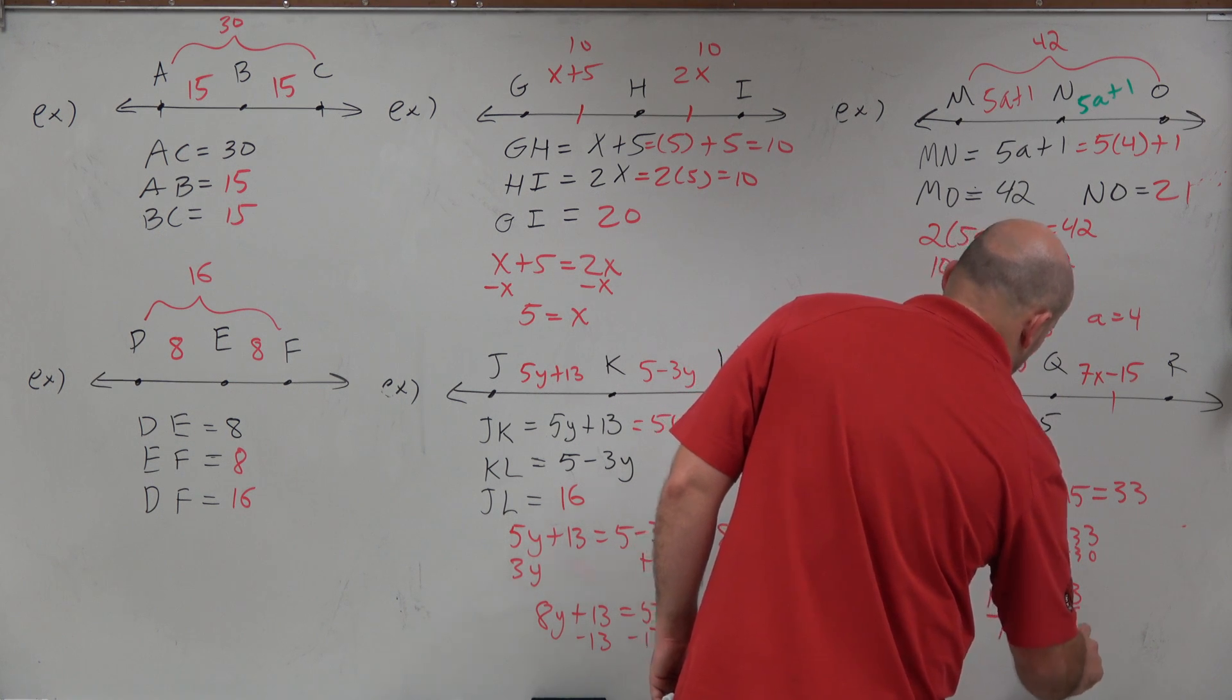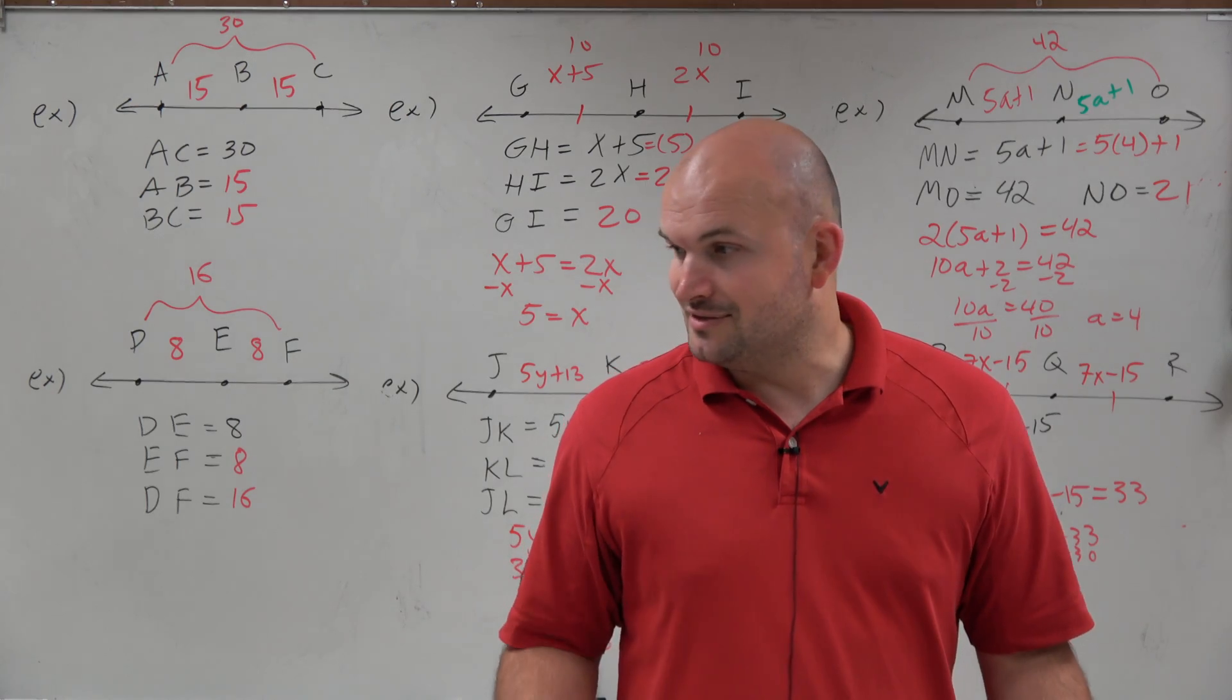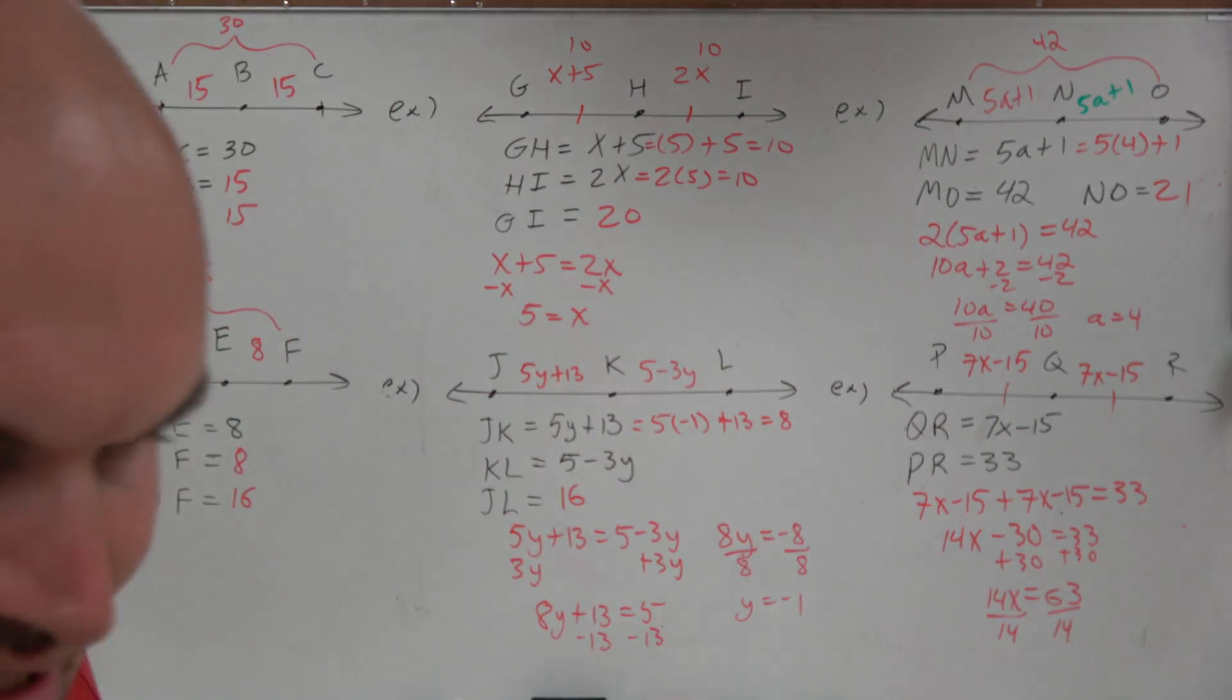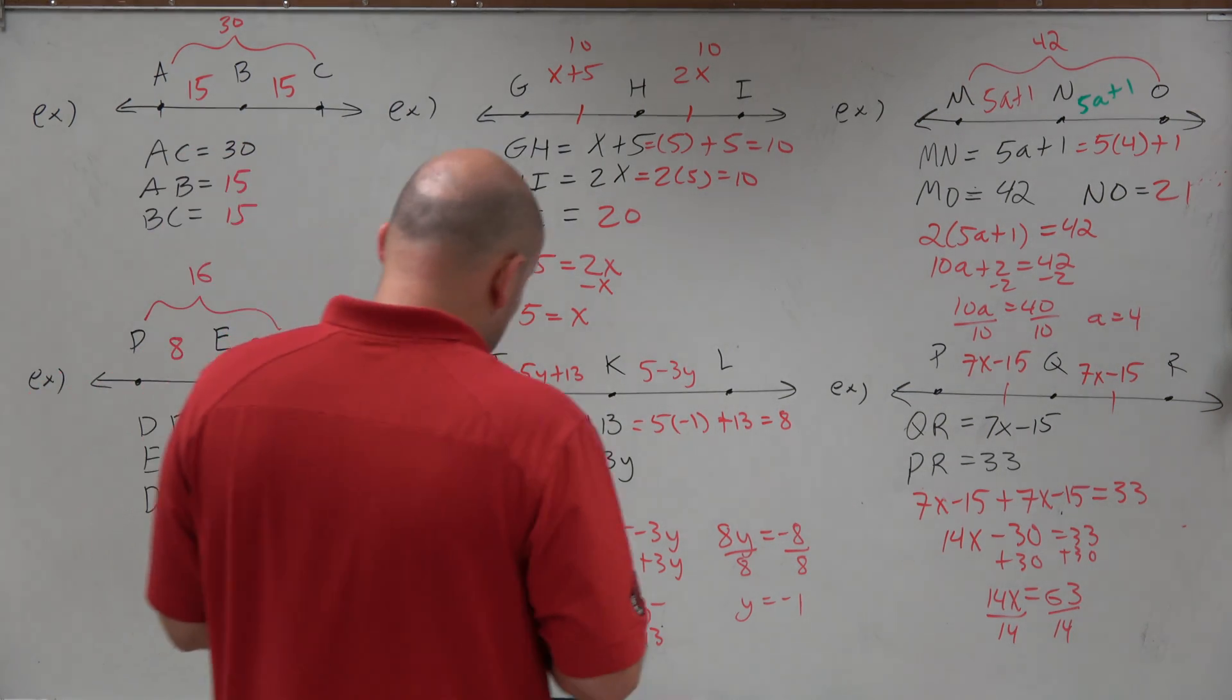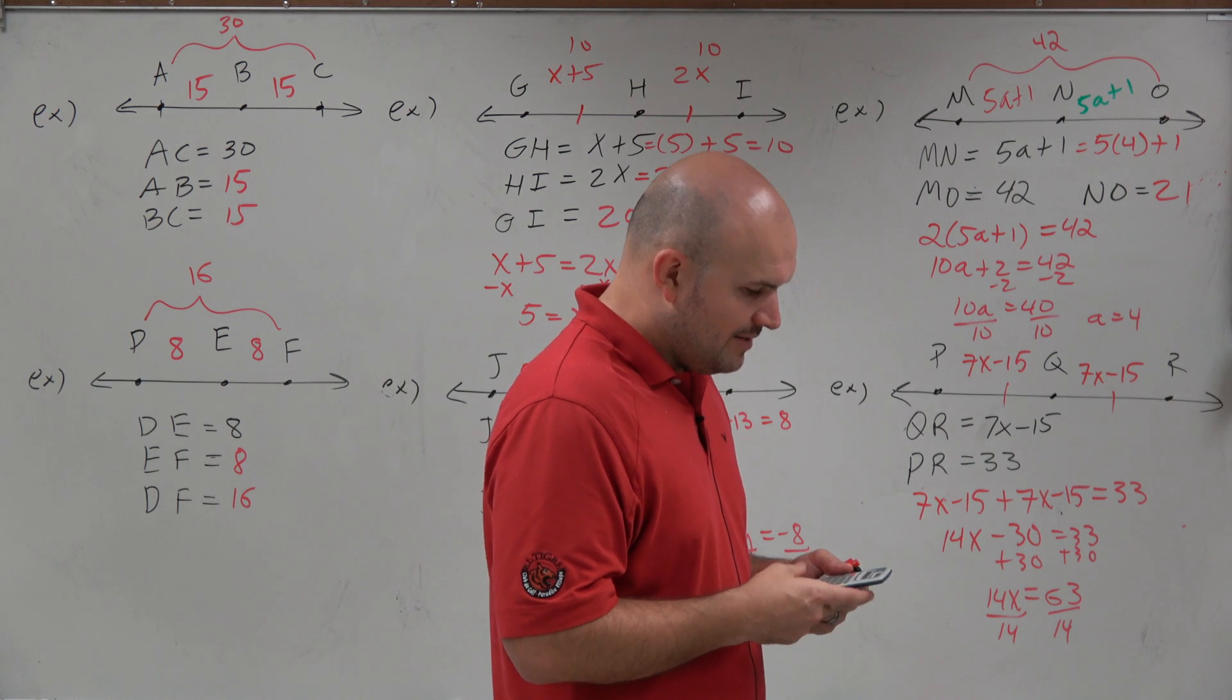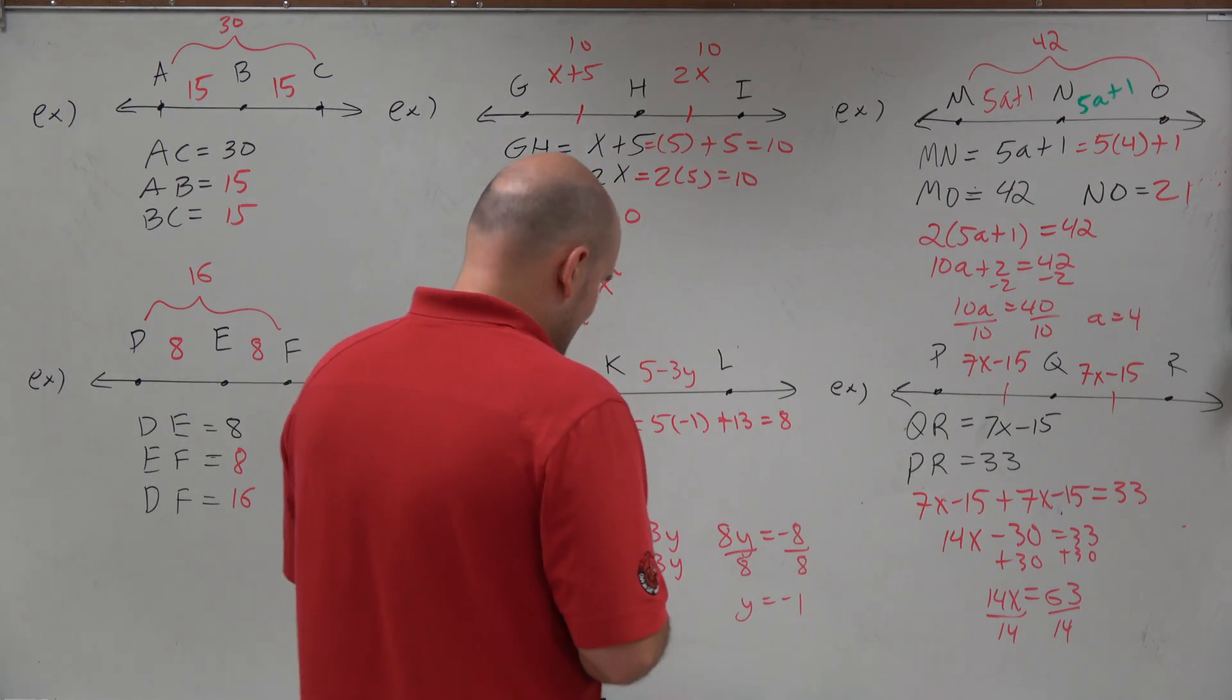14x equals 63. Divide by 14, divide by 14, and uh-oh, we have an issue. The 63 or 14 does not evenly divide into 16. So I'll just go ahead and use my calculator, and we'll kind of get a 63 divided by 14, and we get 4.5.